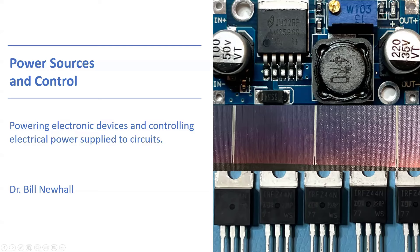Next, we're going to move on to talking about power sources like batteries and solar panels, and control of power sources — like you're doing in lab with pulse-width modulating motor power to control motor speed, and in general turning current on and off to loads so that you can electronically control motors, actuators, solenoids, heaters, and things like that.